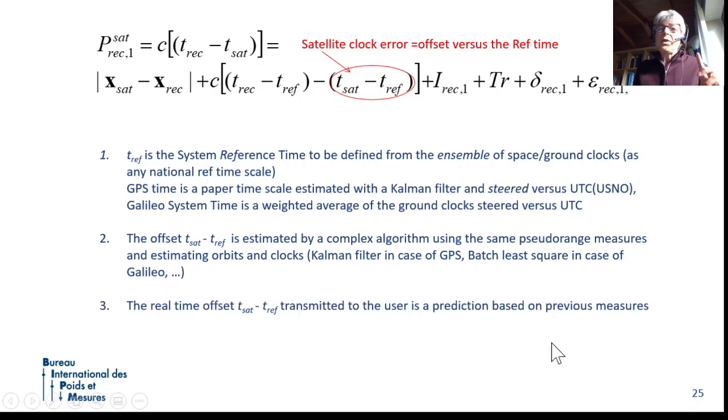And then, last important thing, what is transmitted by the satellite is a prediction. In fact, the satellite is telling you, my clock has 5 nanosecond offset with respect to the system time. How can he know? The control station, some hours ago, estimated with all the measurements that the clock on satellite X had maybe one nanosecond offset, and using previous measurements, they were able to see, estimate, that the clock of that satellite has an offset which is growing.